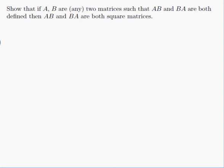Show that if A and B are any two matrices such that AB and BA are both defined, then AB and BA are both square matrices. Well, in order to understand this we need to know what all the words mean. So we need to know what it means for AB and BA to both be defined. And in order to do that we need to know about the sizes of A and B.